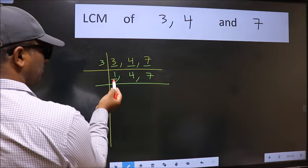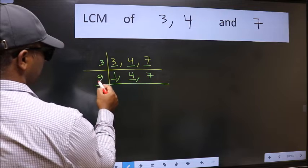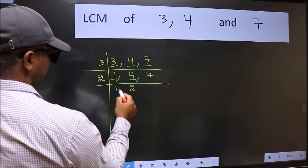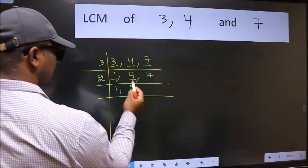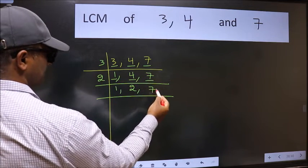Now we got 1 here, so focus on the next number 4. 4 is 2 times 2 is 4. The other number 7 not divisible by 2, so we write it down as it is.